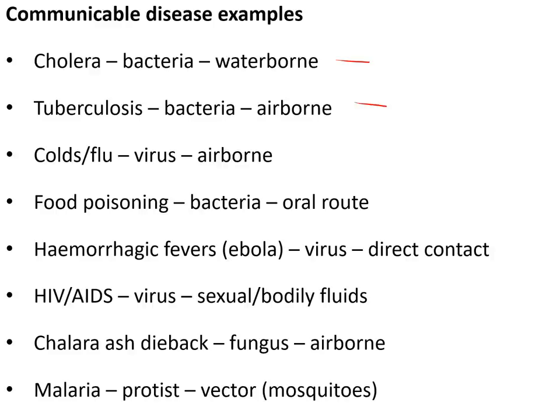Colds and flu are caused by viruses which are airborne — someone sneezes and you breathe in a mist of mucus. Food poisoning is normally caused by bacteria on contaminated food, which is the oral route. Haemorrhagic fevers like Ebola, where you bleed to death internally, are caused by viruses spread by direct contact.